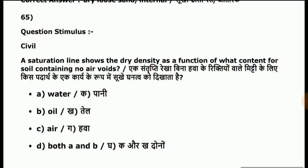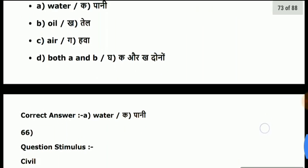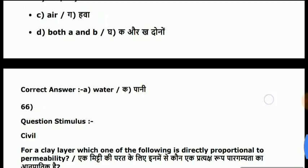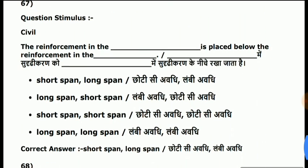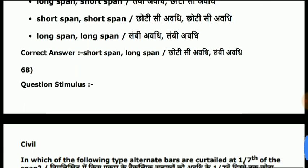Question 65: the saturation line — dry density as a function of water content for soil containing no air voids. Answer is water. Question 66: for a clay layer, which one of the following is directly proportional to permeability? Answer is time factor. Question 67: the reinforcement in the shortest span is placed below the reinforcement in the longest span. Answer is shortest span and longest span.